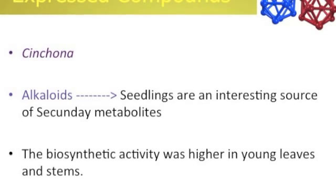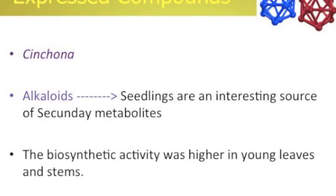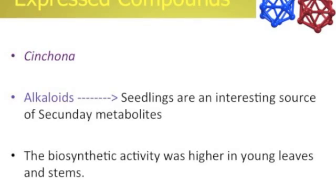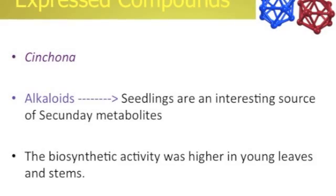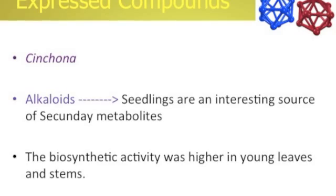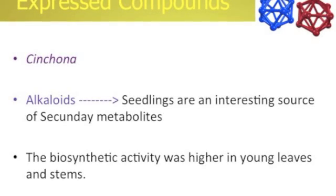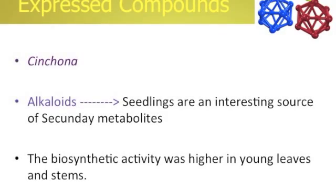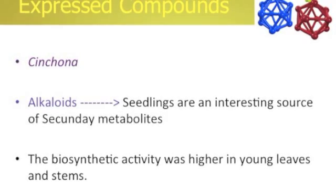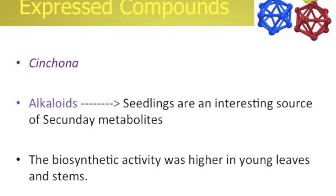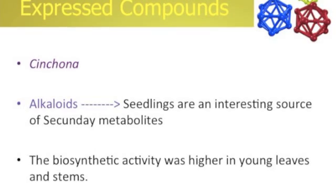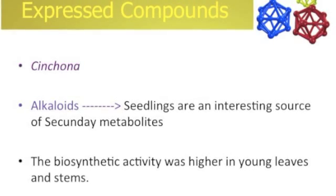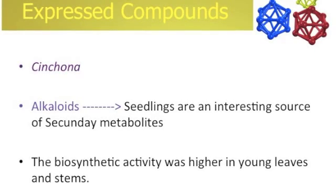The constitutively expressed compounds are typically produced in a particular part of the plant, like leaves, roses, flowers, fruits, etc. For example, we find cinchona — an alkaloid produced in the Cinchona succirubra plant. A review concluded that the biosynthetic activity of these compounds was higher in young leaves and stems, showing that the quantity of alkaloids is greater in the young period of the plant.